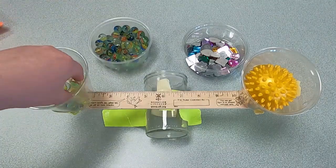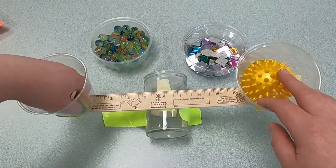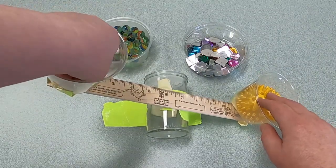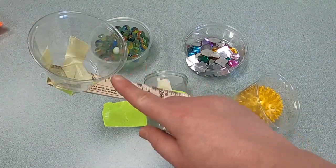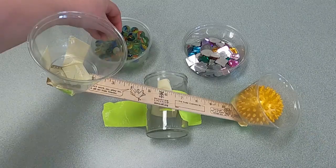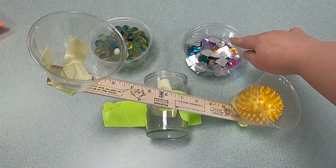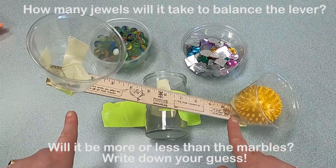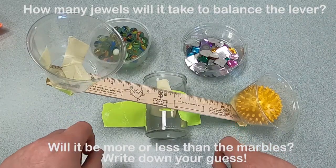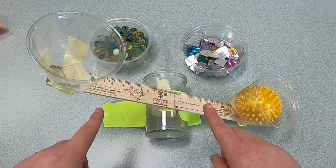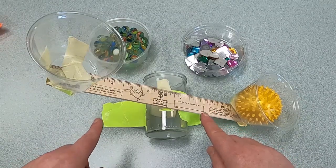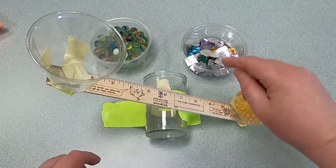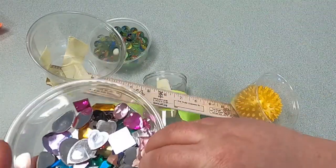Let's take the marbles out and let's try the jewels now. The ball is heavier than the empty cup, so it's back on the ground. So how many jewels do you think it will take to make this lever balanced again? I'll let you guys guess. And also, do you think it will be more or less than the marbles? Alright, you've got your guess, so let's find out.